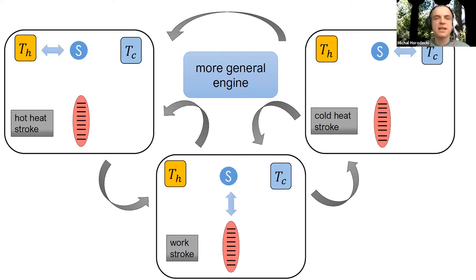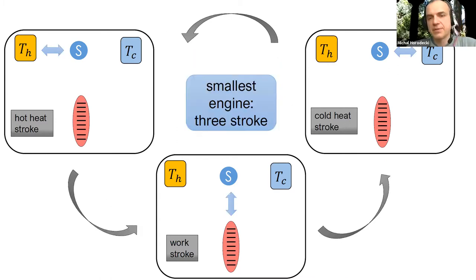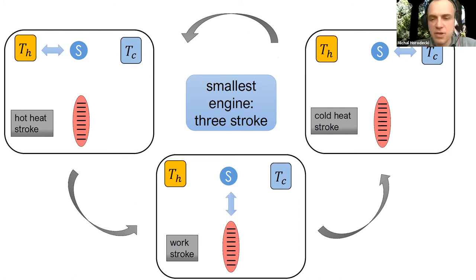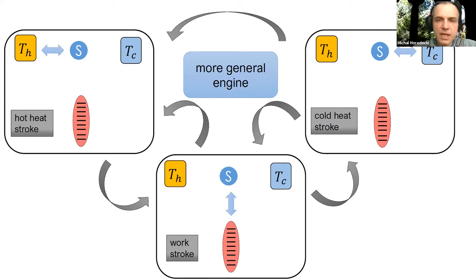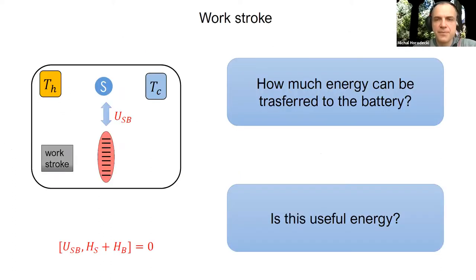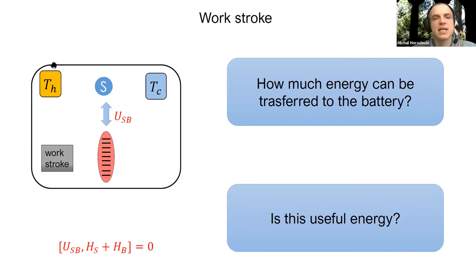Out of these three strokes, one can combine various sequences in a single cycle. We mostly consider the simplest setup: this three-stroke engine is actually the smallest possible engine in the sense that it uses the minimal number of strokes that can draw work. With only two strokes you cannot extract work.